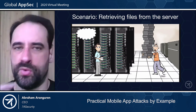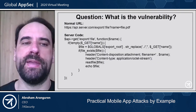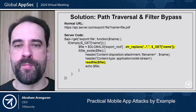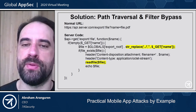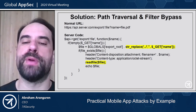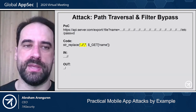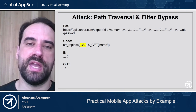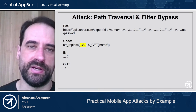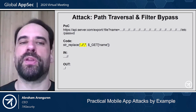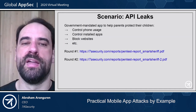Now let's look at API attacks — creating files from the server via API. The issue here is a string replace of dot-dot-slash — this looks okay to many developers but in reality it is not. If you provide a sequence like dot-dot-dot-dot-slash-slash, the dot-dot-slash is removed but you end up with another dot-dot-slash, because removing the inner pattern leaves the surrounding dots. So you can turn dot-dot-dot-dot-slash-slash into dot-dot-slash, achieving a path traversal. That is how you would fix that.